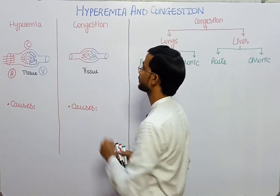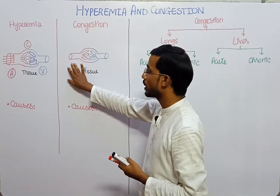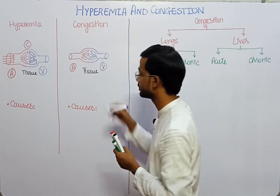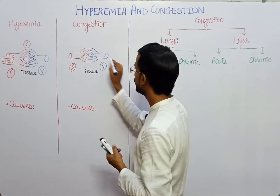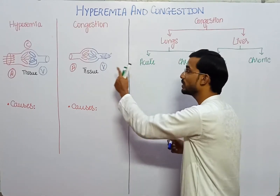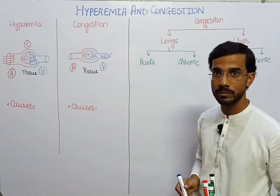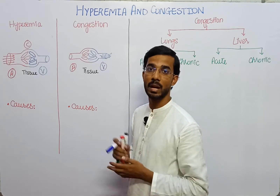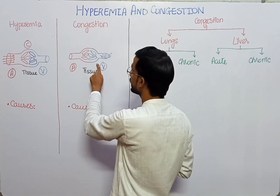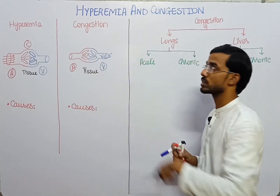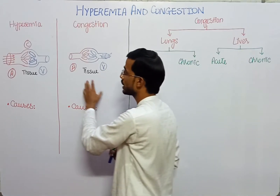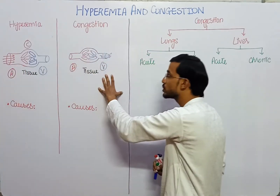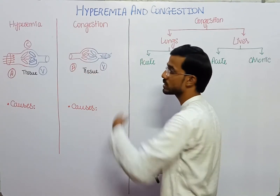Opposite to that, in congestion, the arterioles and the venules remain safe. There is no dilation, but there is a difference. If due to any reason the blood output from the venule is blocked or reduced, then the blood will retain in the capillaries — or you can say in the tissues, because capillaries are present in the tissues — and this causes congestion. In both situations the blood retains in the tissues, but in hyperemia it is due to dilation of arteries, and in congestion it is due to reduced or blockage of the venous return.